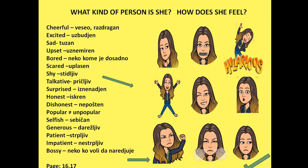You can use these adjectives to describe people. We can use these adjectives to describe people's characteristics — their personality traits. So this one, as we said, can be bossy. Here you have the translation as well. So please look at these adjectives again and try to describe a person using these adjectives.